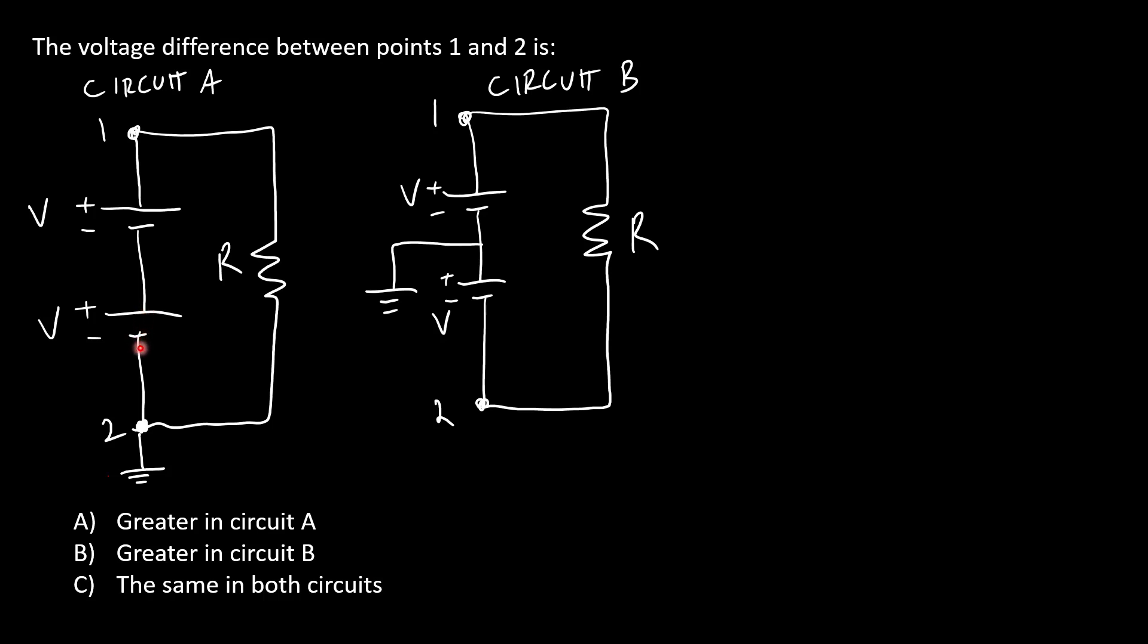Both circuits consist of two batteries of voltage V in series connected to a resistor, with point 1 defined at the top of the top battery and point 2 defined at the negative terminal of the lower battery.